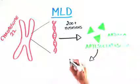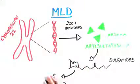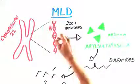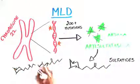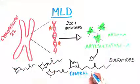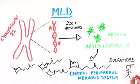This enzyme breaks down sulfatides, a normal byproduct of cell life. When ARSA-A is mutated, the sulfatides accumulate throughout the body, especially in the central and peripheral nervous systems, i.e. the brain, spinal cord, and nerves.